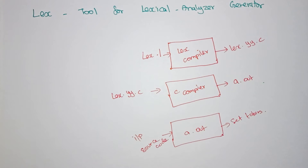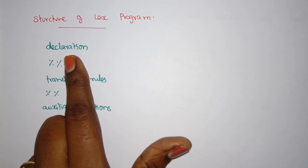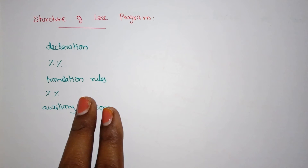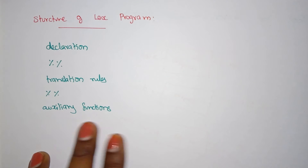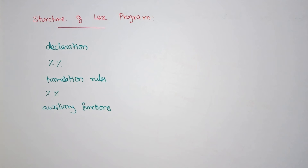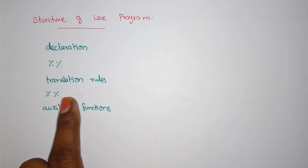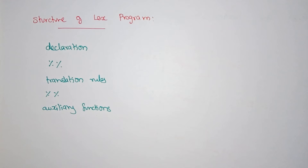Now we'll see the structure of a LEX code. A lexical program has three parts: the declaration portion, which contains all the rules; the translation rules, which define what action to perform when a token is formed; and auxiliary functions, which contain any extra functions needed. These three sections are separated by the double percentage '%%' symbol.